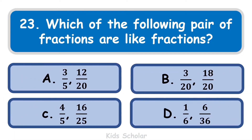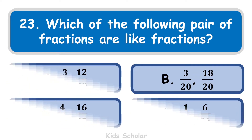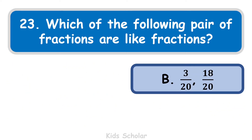Next question is: which of the following pairs of fractions are like fractions? The options are: A) 3 by 5 and 12 by 20, B) 3 by 20 and 18 by 20, C) 4 by 5 and 16 by 25, D) 1 by 6 and 6 by 36. The correct answer is B — 3 by 20 and 18 by 20 — because both fractions have the same denominator, that is 20.